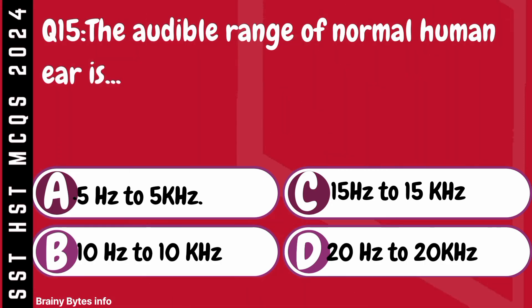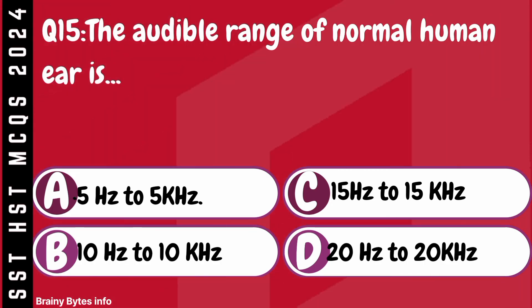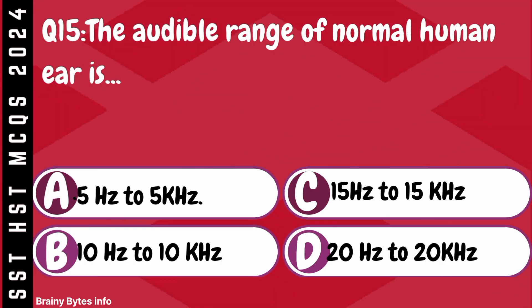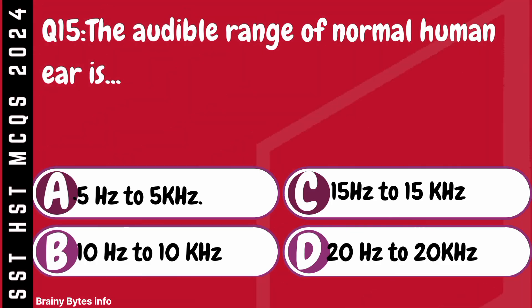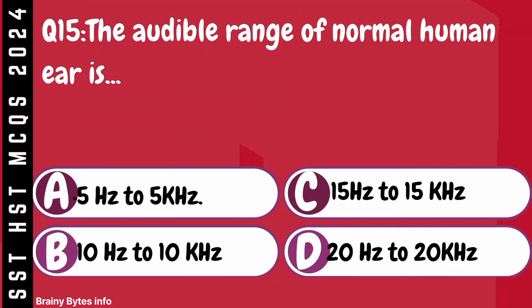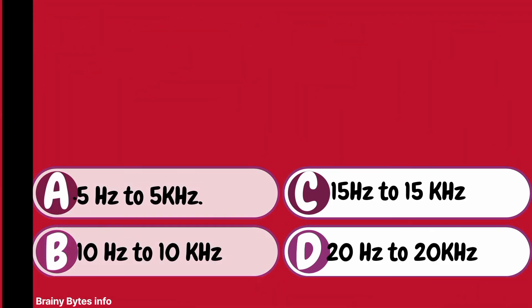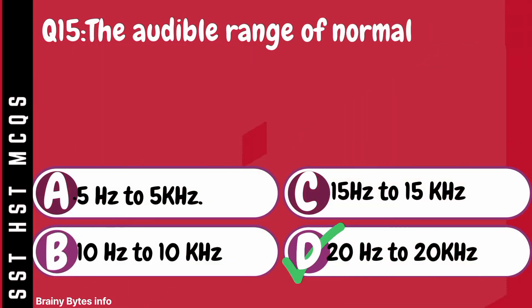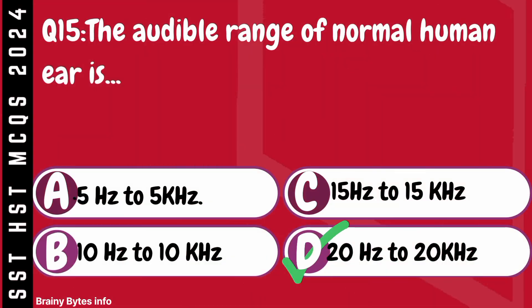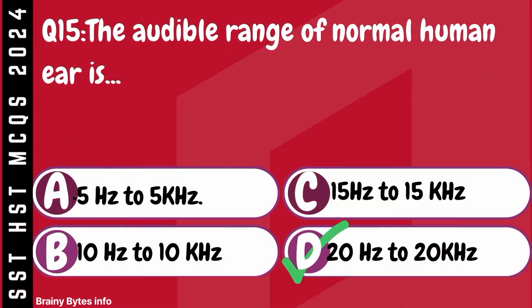Question 15. The audible range of the normal human ear is. A. 5 Hz to 5 kHz. B. 10 Hz to 10 kHz. C. 15 Hz to 15 kHz. D. 20 Hz to 20 kHz.